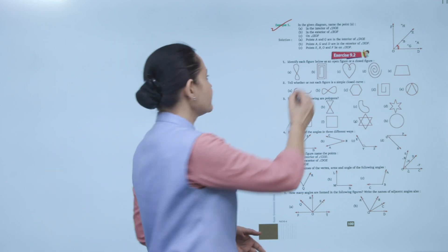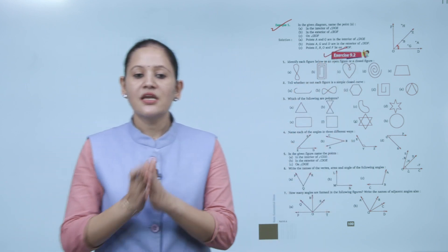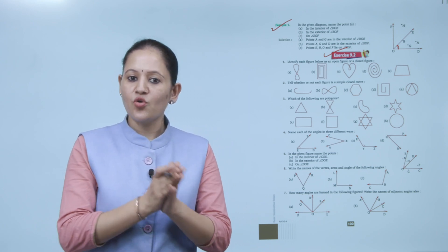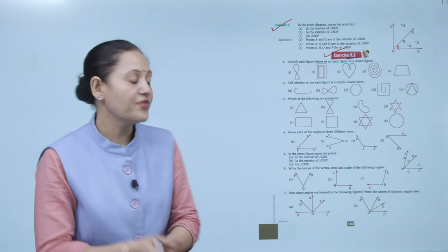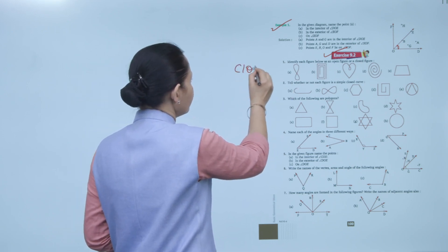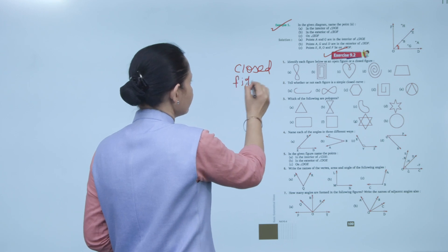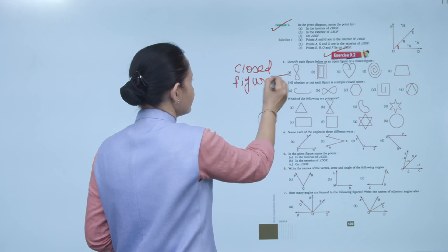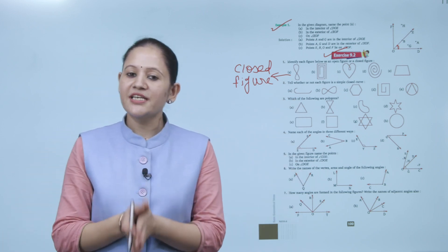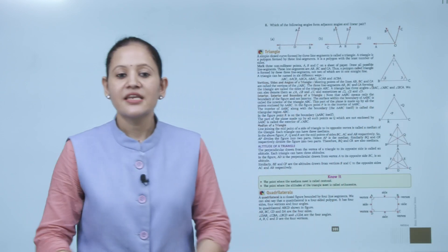Exercise 9.2: Identify each figure as an open figure or a closed figure. The first one is a closed figure. Practice all the questions of this exercise.